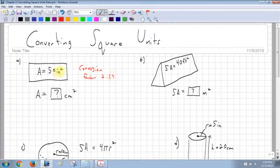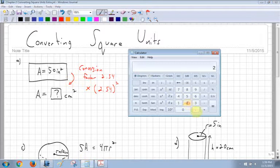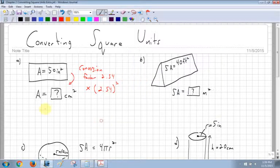So my conversion factor for square units is going to be 2.54 squared. So when I'm converting inches to centimeters, I'm going to be multiplying by 2.54 squared. So what I can do is I can go 2.54, square it, and then multiply it by my 50, and I get 322.58. So 322.58, now I have centimeters squared.